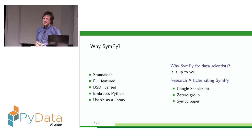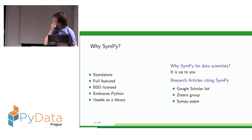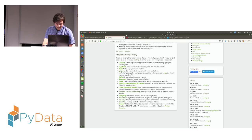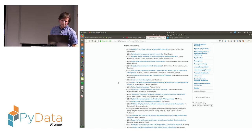If you want to see what SymPy is used for, you can look at the Google Scholar list of citations of SymPy papers, or there is a group collecting all scientific research articles where SymPy is being used. Here is some list, so you can get some inspiration about which fields SymPy is being used in currently. Of course, you may find new applications.